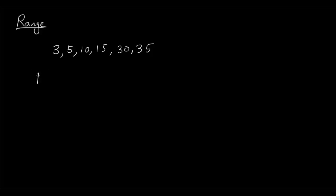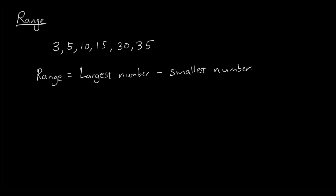Now the range is very easy to find. The range is simply the largest number minus the smallest number. You can find it just by looking at the data. We can see that the largest number is 35 minus the smallest number is 3, so the answer is 32. That's the range.